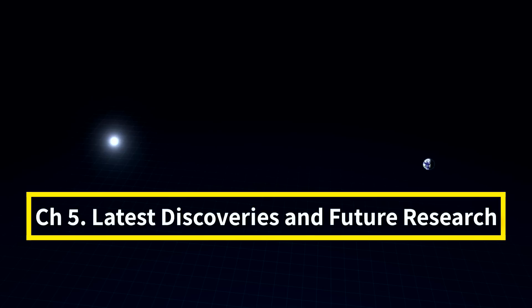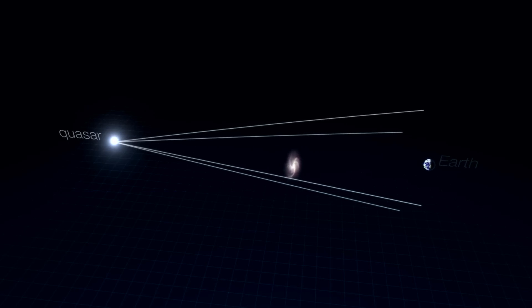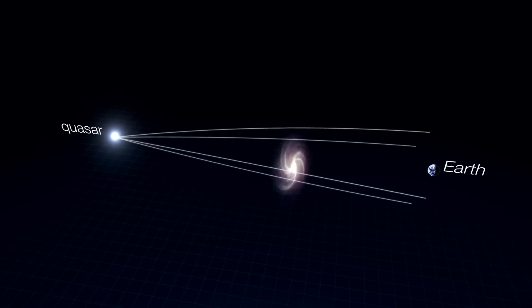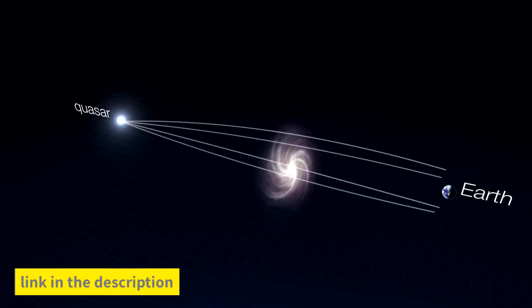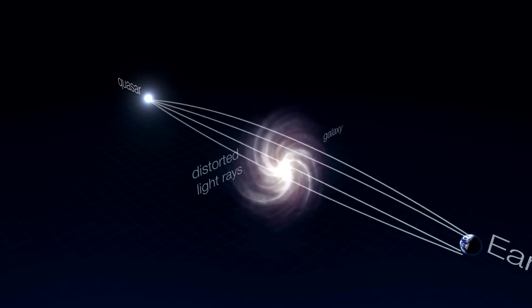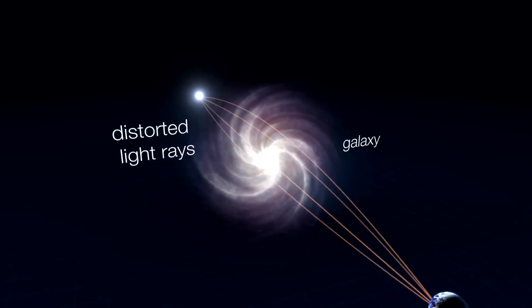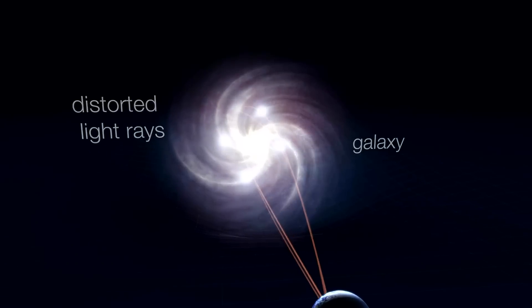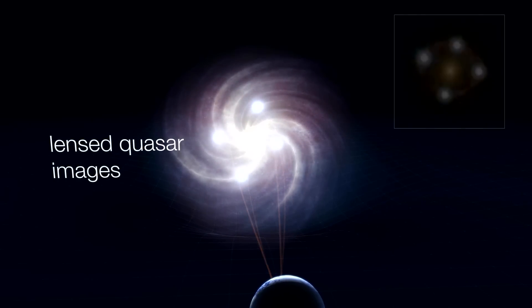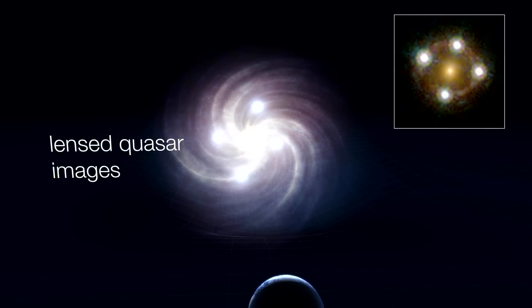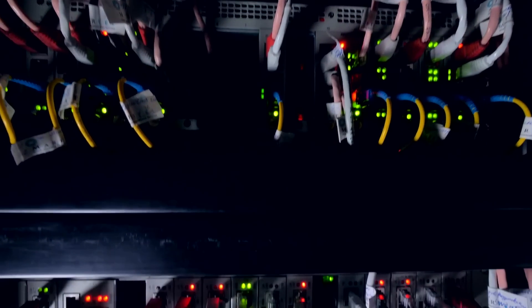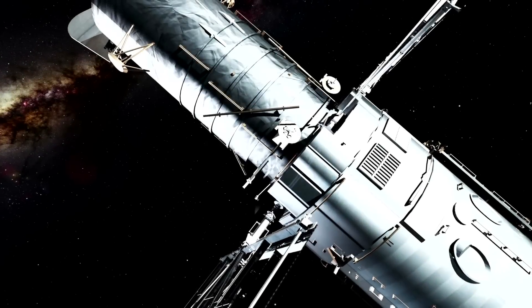One of the most exciting recent discoveries involves a team from Durham University. They found an ultra-massive black hole, one of the largest ever detected, using a method known as gravitational lensing. This is a bit like using a nearby galaxy as a giant magnifying glass to see distant black holes. They also used supercomputers and images from the Hubble Space Telescope to confirm its size.